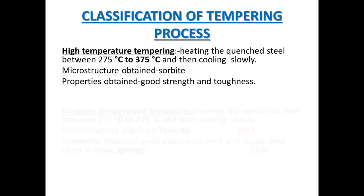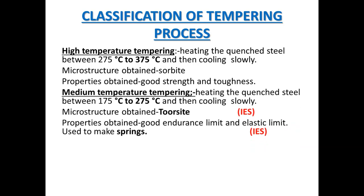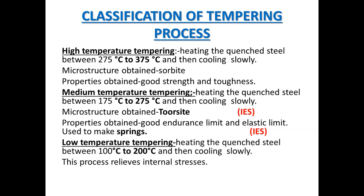Now let us discuss the second one: medium temperature tempering. In medium temperature tempering, quenched steel is heated between 175 degrees Celsius to 275 degrees Celsius and held at this temperature for some time, then cooled slowly. By doing this, the microstructure changes to troostite, which has high endurance limit and elastic limit. This is employed for making measuring tools, cutting tools, and springs.